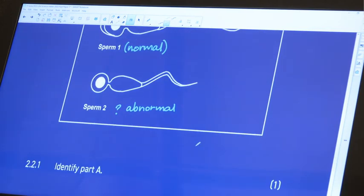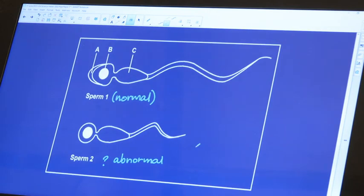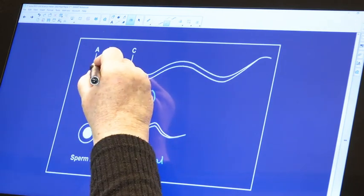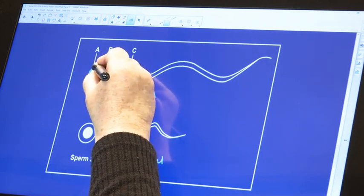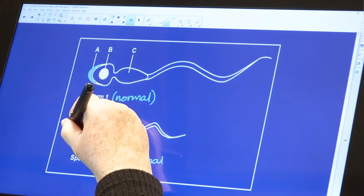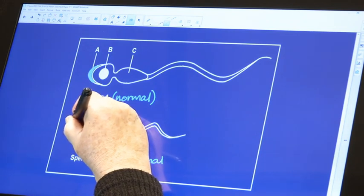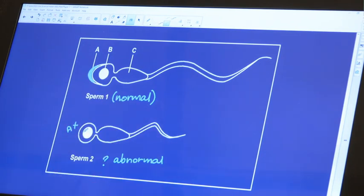Identify part A. Back to our diagram. What is this part of the normal sperm cell? Interestingly, part A is missing in the abnormal cell. So what is that part A?